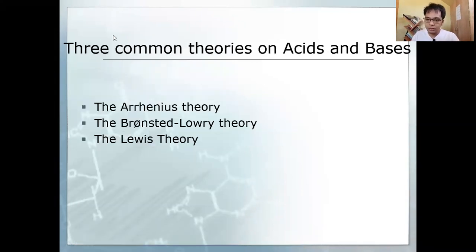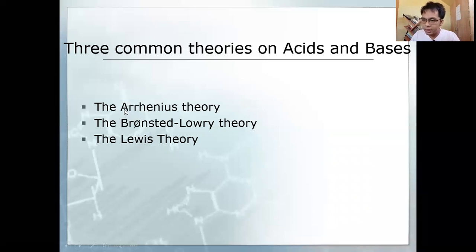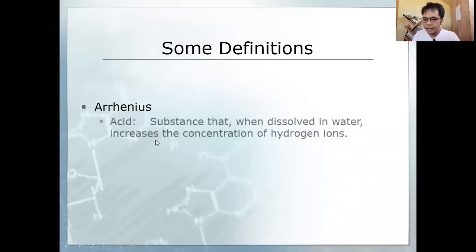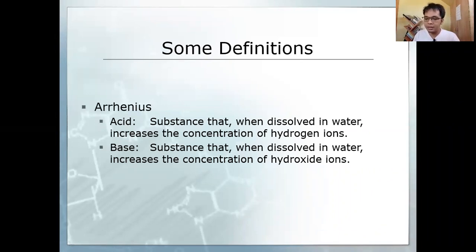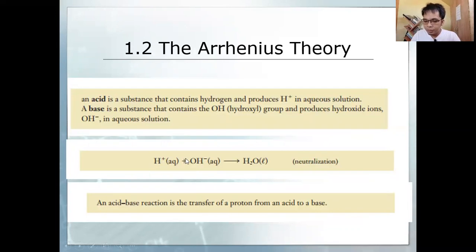What are the common theories of acids and bases? There are three discussed in general chemistry: Arrhenius, Bronsted-Lowry, and Lewis. According to the Arrhenius theory, an acid generates hydrogen ions when dissolved in water, while a base generates hydroxide ions when dissolved in water. When an Arrhenius acid and Arrhenius base are mixed in a neutralization reaction, they combine to form H₂O.